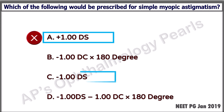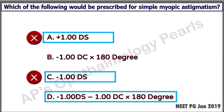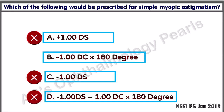So this choice is out. The same goes for this next choice. Here there is power for both the sphere and the cylinder, meaning this is a compound myopic astigmatism, so this choice is also out. In the remaining choice there is only a minus cylinder in one meridian, so this is simple myopic astigmatism, and this is the correct answer.